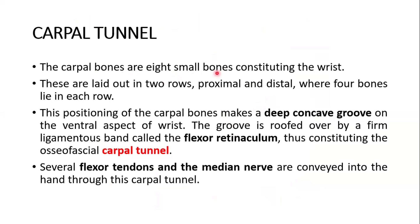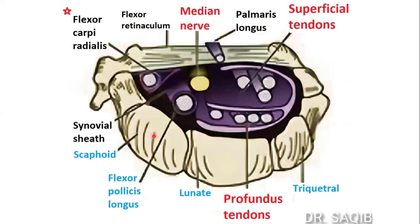The carpal bones are eight small bones constituting the wrist, laid out in two rows — proximal and distal — where four bones lie in each row. This positioning of the carpal bones makes a deep concave groove on the ventral aspect of the wrist, which is roofed over by a firm ligamentous band called the flexor retinaculum, thus constituting the osteofascial carpal tunnel.